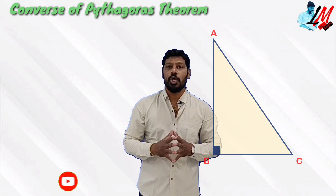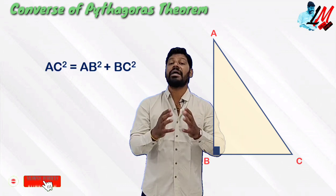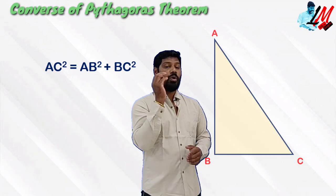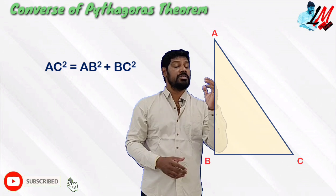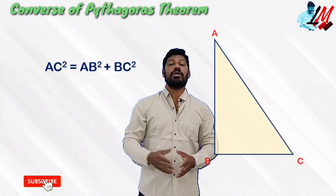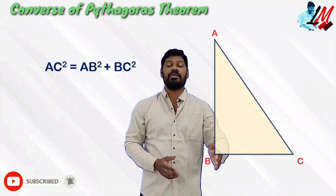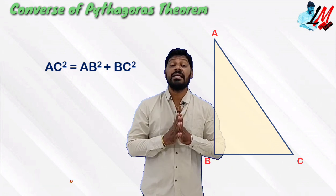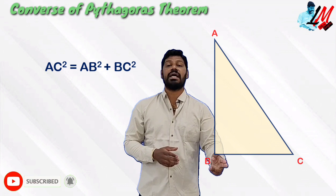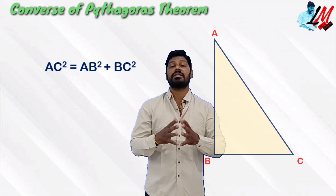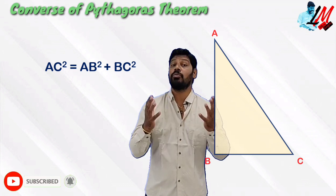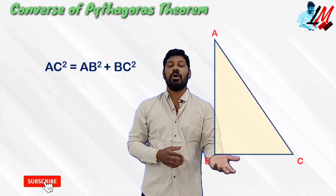So, AC² is equal to AB² plus BC². Then, the angle opposite the first side — we consider AC is the side opposite to the angle of 90 degrees. That is the Pythagoras theorem. And the converse: in triangle ABC, AC is the side opposite to the 90 degree angle.